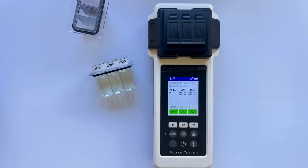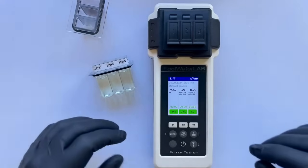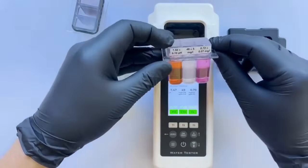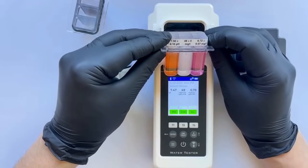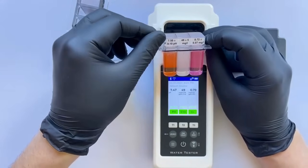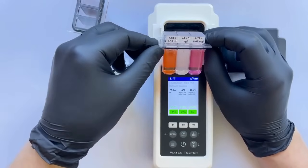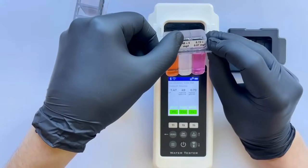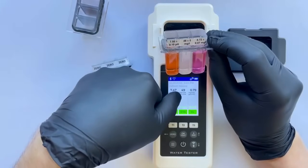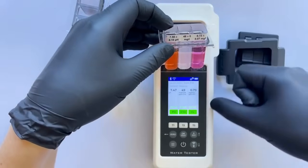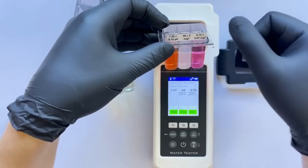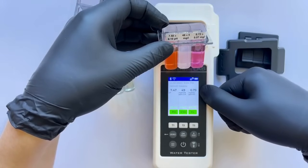Let's compare these with the results provided by an independent laboratory to verify their accuracy and ensure our measurements align with those of a certified testing facility. According to the independent laboratory, the pH result is 7.50, while our tester shows 7.47. For CYA, the independent laboratory recorded a value of 48, and our tester displayed 49. Regarding free chlorine, the independent laboratory reported a level of 0.72, whereas our tester gave a result of 0.79.